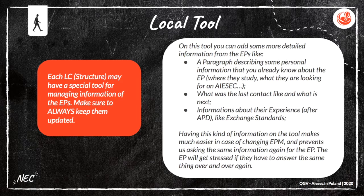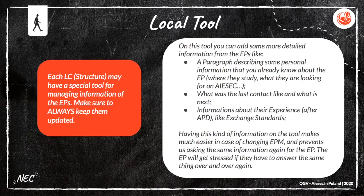We also have local tools. Each LC structure may have a special tool for managing information about the EPs — make sure to always keep them updated. This tool can add more detailed information from the EPs, like a paragraph describing personal information you already know about the EP: where they study, what they are looking for on AIESEC, what the last contact was like and what is next, and information about their experience after approval, like exchange standards. Having this kind of information on the tool makes it much easier in case of changing EPM and prevents us from asking the EP the same information again. The EP will get stressed if they have to answer the same things over and over again.